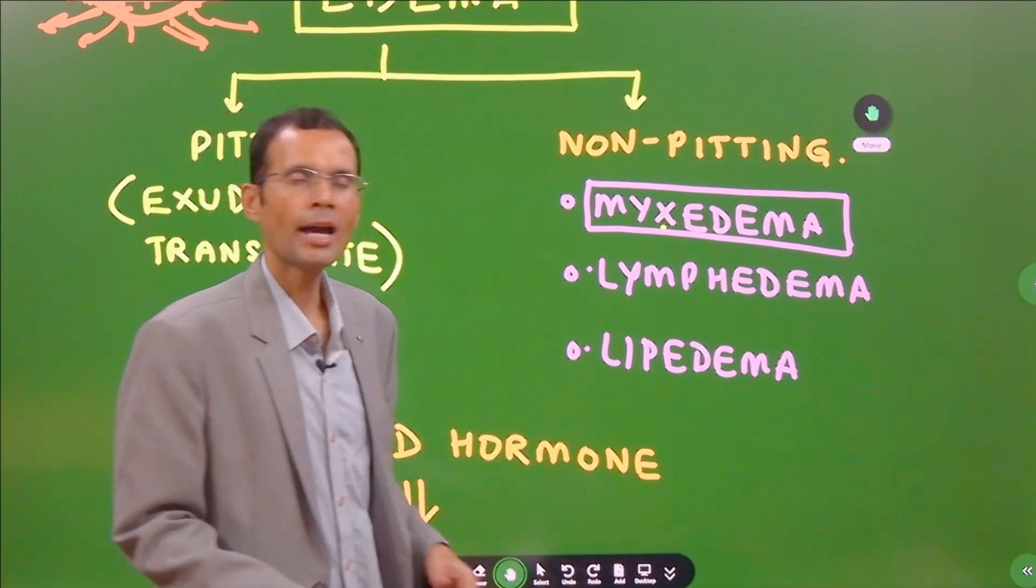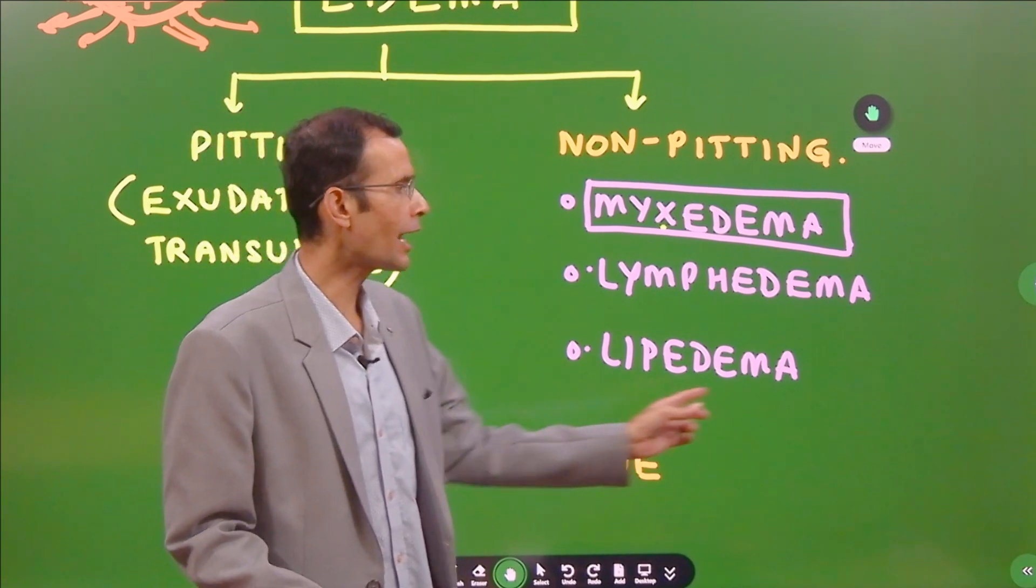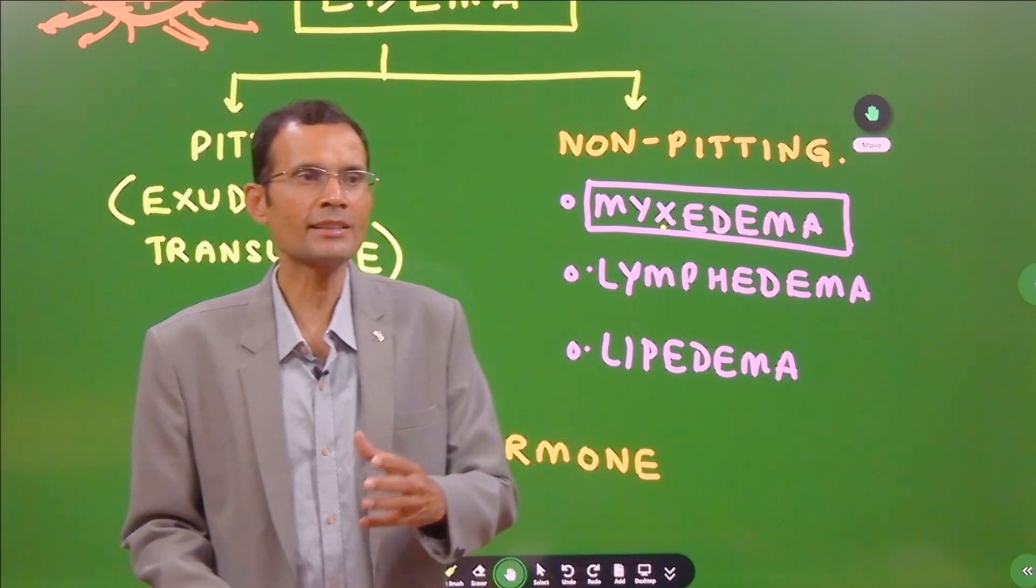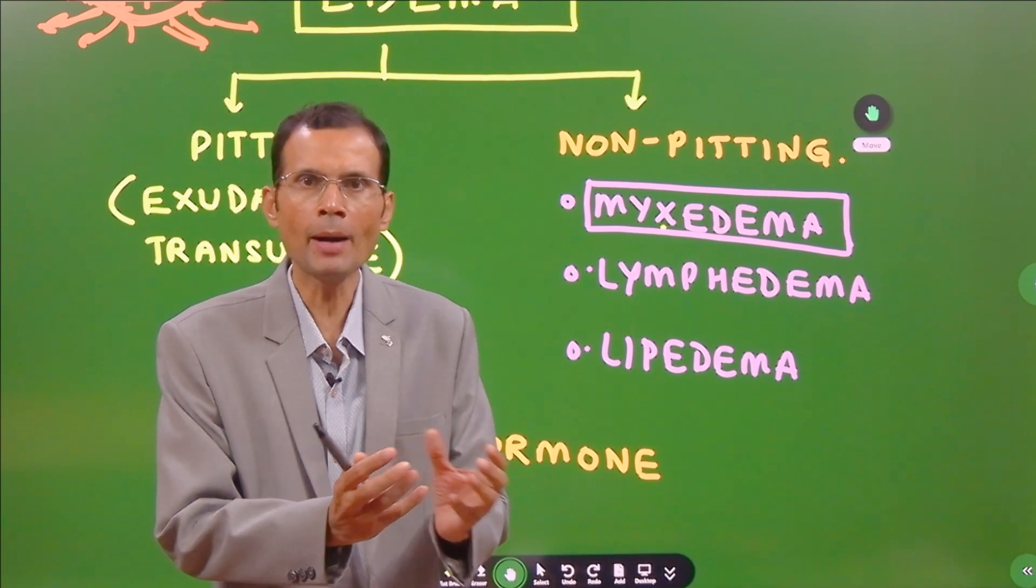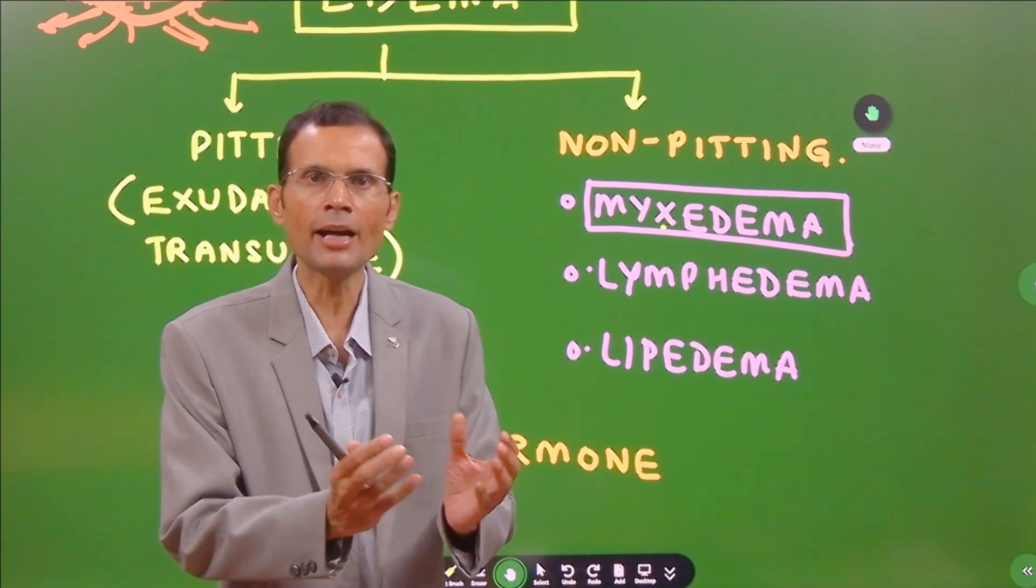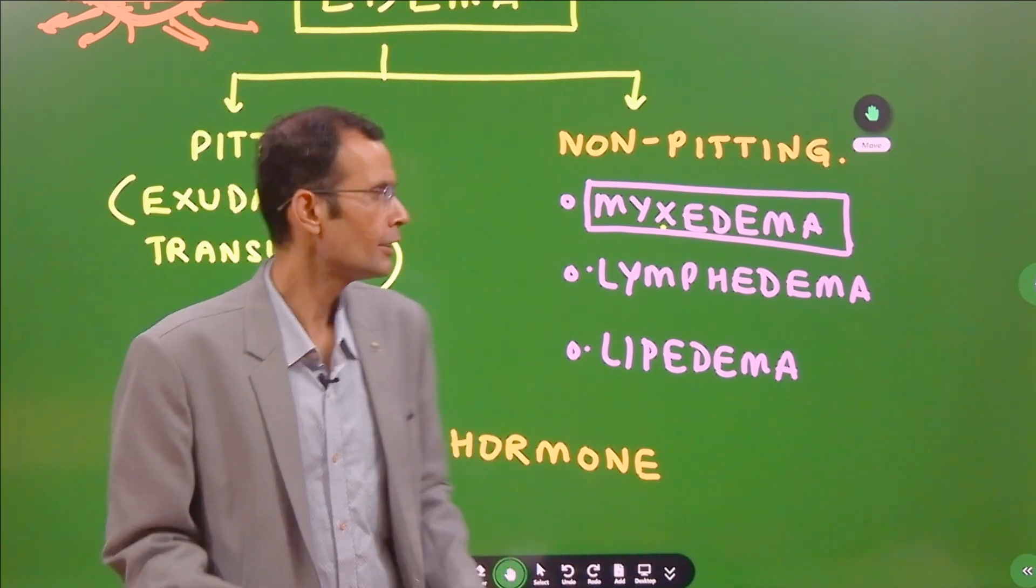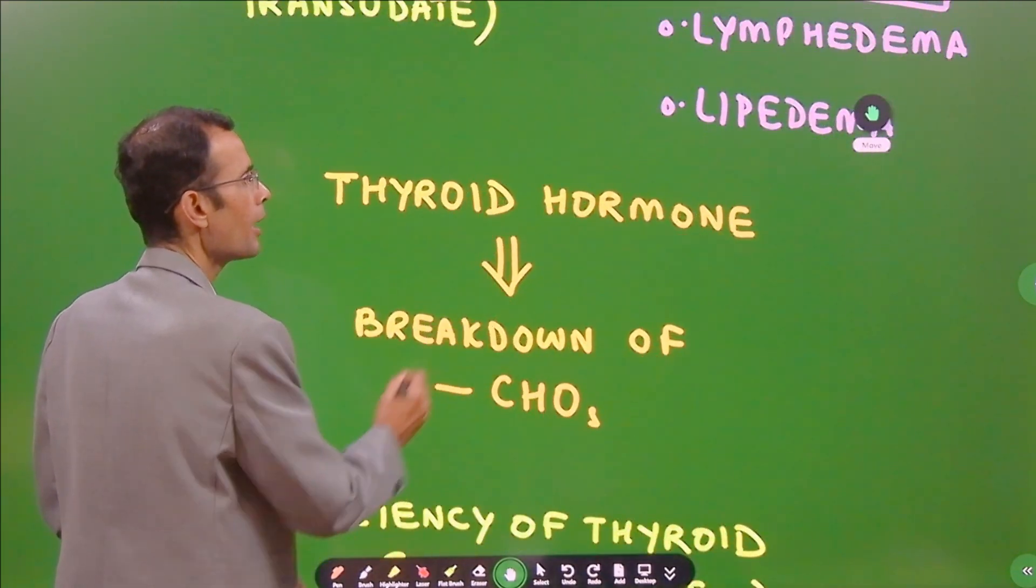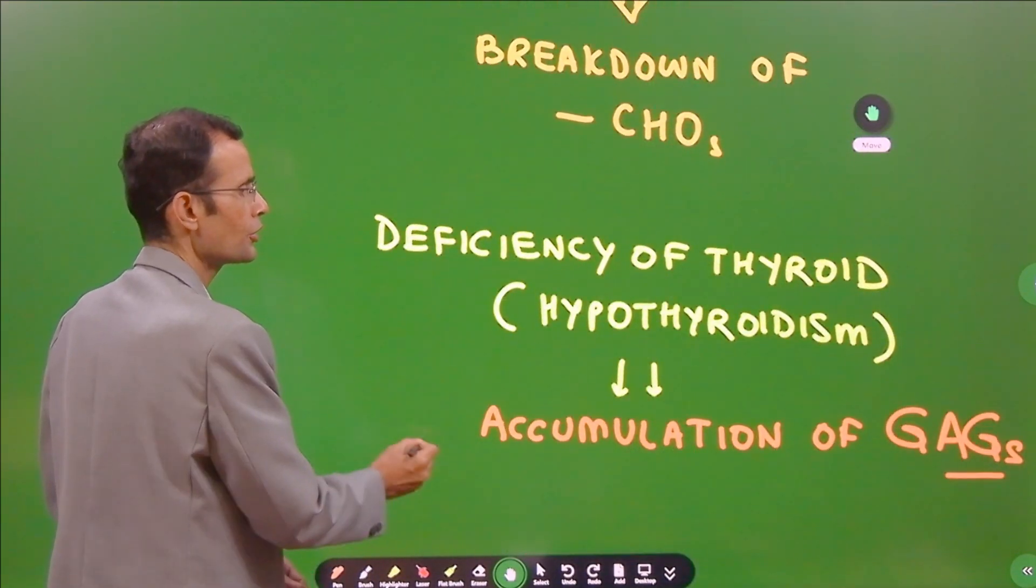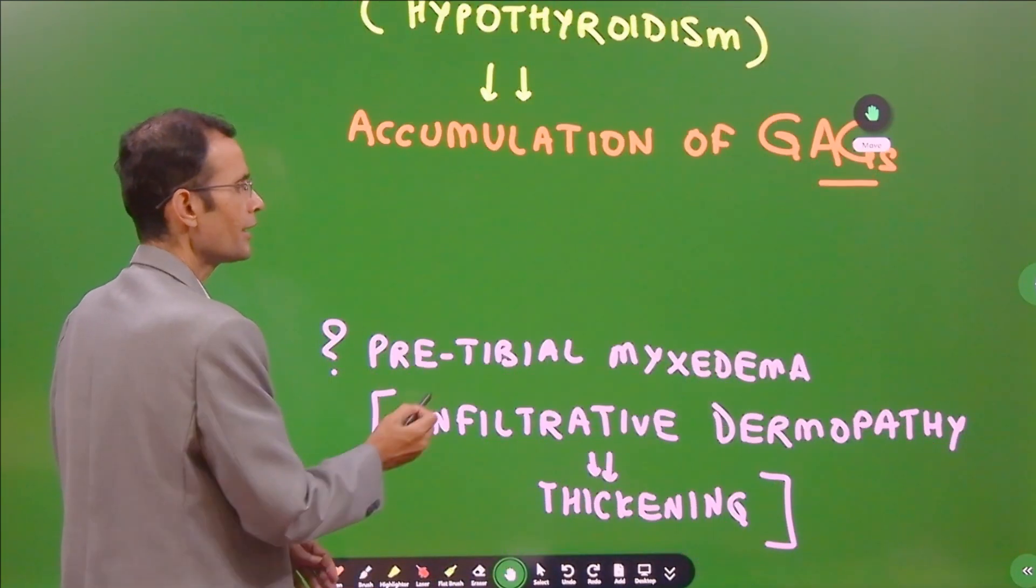Non-pitting type of edema. Another condition, which is not so common, is lipedema—excess accumulation of fatty tissue. It becomes a very tightly edematous region. You apply pressure, it does not form any pit. So, these are the conditions which cause non-pitting type of edema. We saw the pathophysiology behind it.